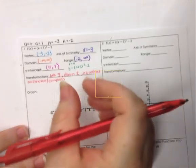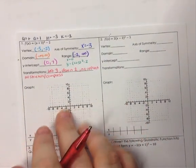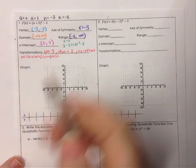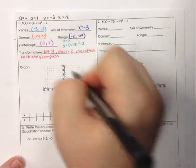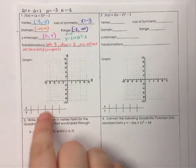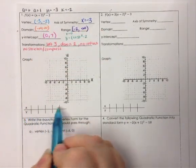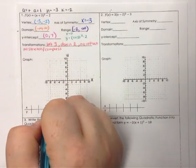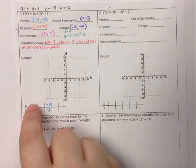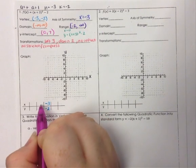Stretching makes the parabola skinnier and compressing makes it more flat. We graph this without a calculator first. We put the vertex in the middle since it's the center of the graph — that's negative 3, negative 2. We fill in x values like a number line: to the right of negative 3 are negative 2 and negative 1, and to the left are negative 4 and negative 5.